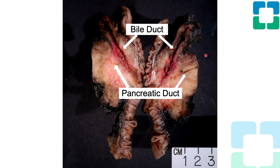Here's the Whipple resection we received in surgical pathology, bisected through the intrapancreatic portion of the common bile duct and the pancreatic duct. The bile duct was probed patent from where it was transected into the duodenum. The pancreatic duct was a little obstructed by this fibrotic mass involving the whole pancreatic head. There wasn't really a discrete mass, though.